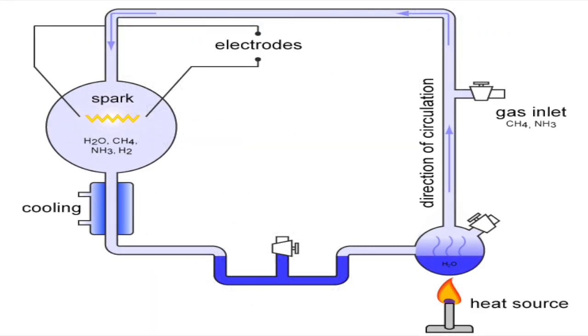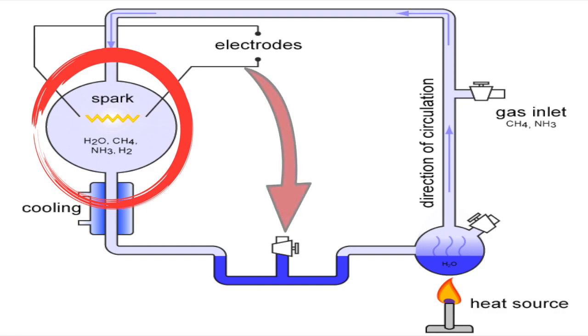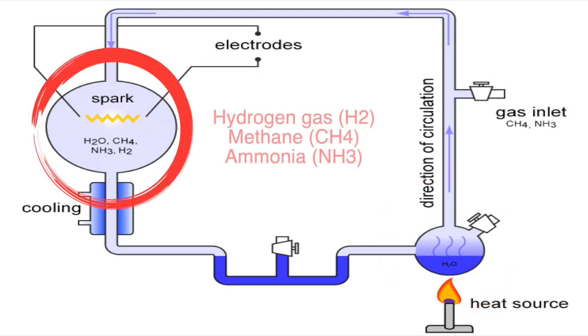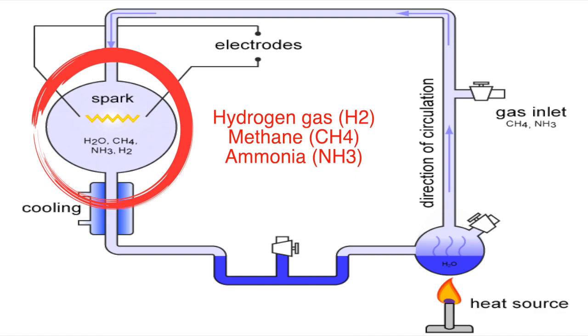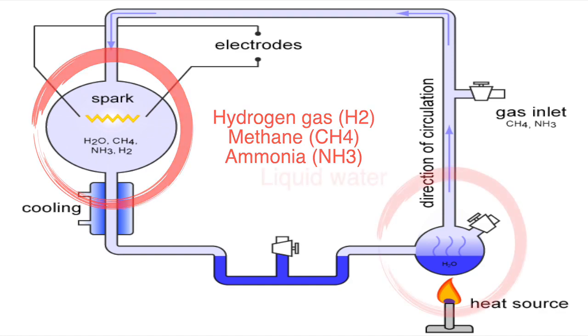Miller designed this experiment in a very simple way but it was very accurate to represent how the atmosphere interacts with the ocean. He used a large flask at the top left of the screen to represent Earth's atmosphere and connected it with glass tubing to a smaller flask at the bottom right to represent Earth's ocean.